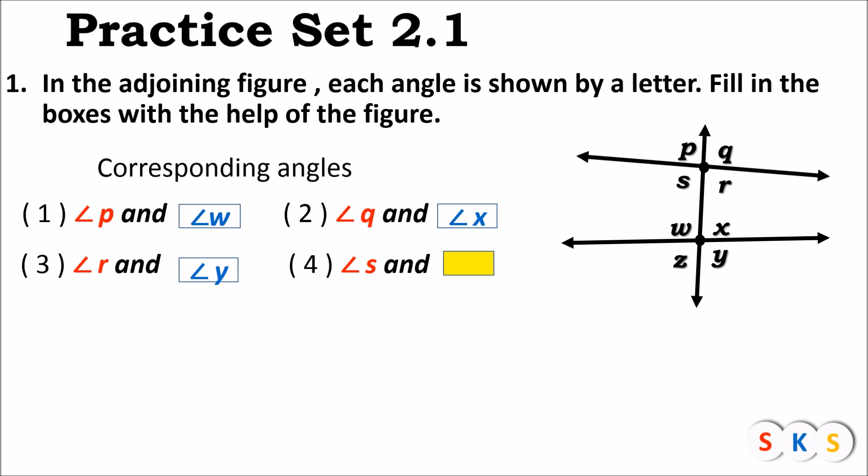The fourth one is angle S and dash — angle Z. So make a note: corresponding angles always lie on the same side of a transversal.